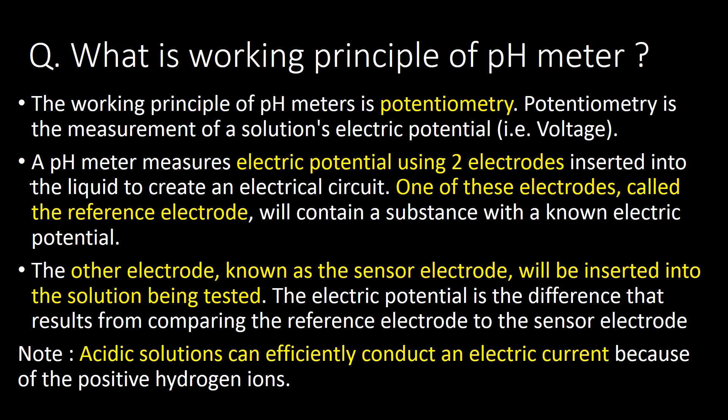One of the most frequently asked questions is: what is the working principle of a pH meter? The working principle of a pH meter is potentiometry. Potentiometry is the measurement of a solution's electric potential, that is, voltage.